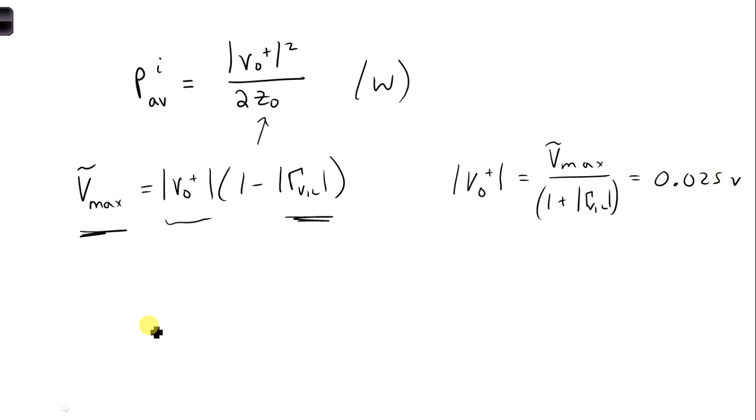Now we can plug that into our incident time average power. We get 0.025 squared over 2. Z naught was given as 50, and we get 6.025 microwatts.